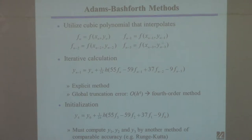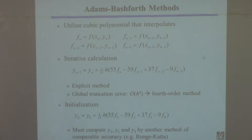It's an explicit method because we know all these values — we've already done the previous iterations to generate them, so it's easy to evaluate. It requires four function evaluations. These coefficients you get by actually performing the integration. It's a relatively high-order method. The Euler method is order h, and the Runge-Kutta method shown previously is order h to the fourth — this is similar.